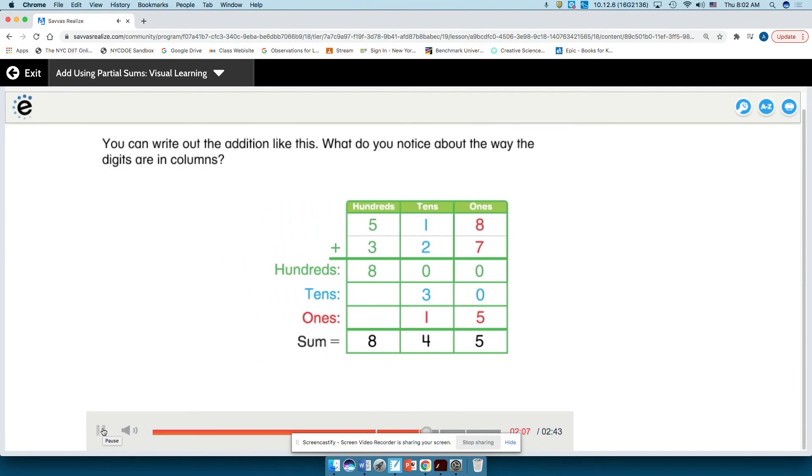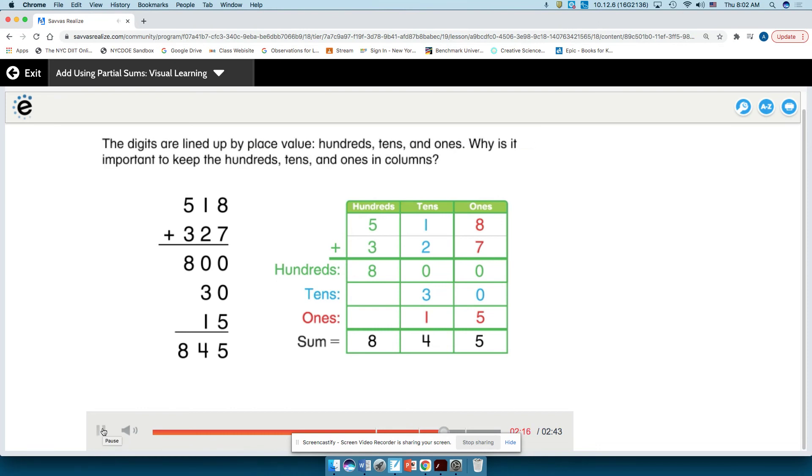You can write out the addition like this. What do you notice about the way the digits are in columns? The digits are lined up by place value: hundreds, tens, and ones.